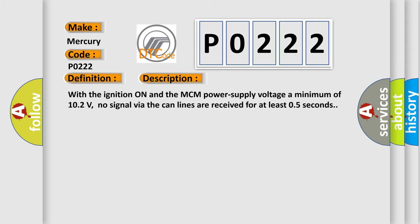With the ignition on and the MCM power supply voltage a minimum of 10.2 volts, no signal via the CAN lines are received for at least 0.5 seconds. This diagnostic error occurs most often in these cases.